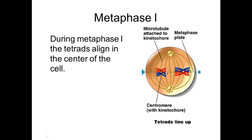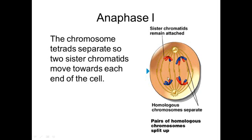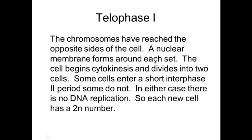After crossing over, you go into metaphase one — just like in mitosis, the tetrads align on the metaphase plate. Then the tetrad pulls apart: one chromosome goes each way, each with sister chromatids. In telophase one, chromosomes reach opposite sides of the cell. Sometimes a nuclear membrane forms around each set, and cytokinesis begins. There is no interphase between telophase one and meiosis two, and no DNA replication.